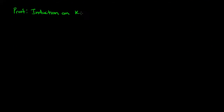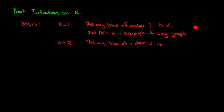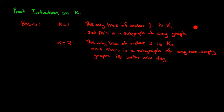The proof is done by induction on k. For the basis, take k equal to one: the only tree of order one is K₁, a single vertex with no edges, which is a subgraph of any graph. We can also look at k equals two: the only tree of order two is the complete graph on two vertices, which is a subgraph of any non-empty graph, i.e., any graph with minimum degree at least one. K₂ is simply two vertices joined by an edge.